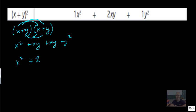x squared plus xy plus xy plus y squared. That is x squared plus 2xy plus y squared.